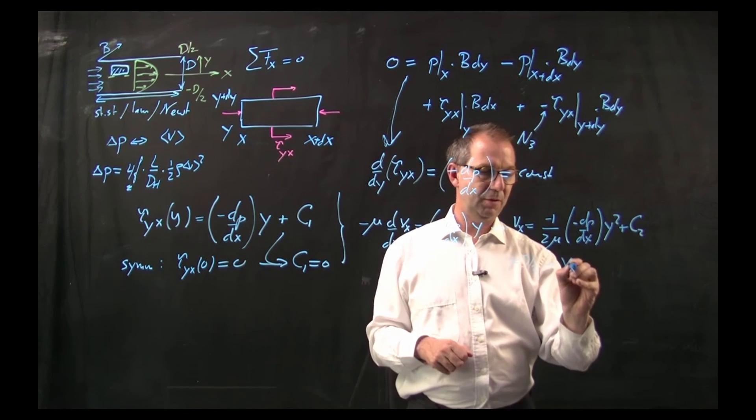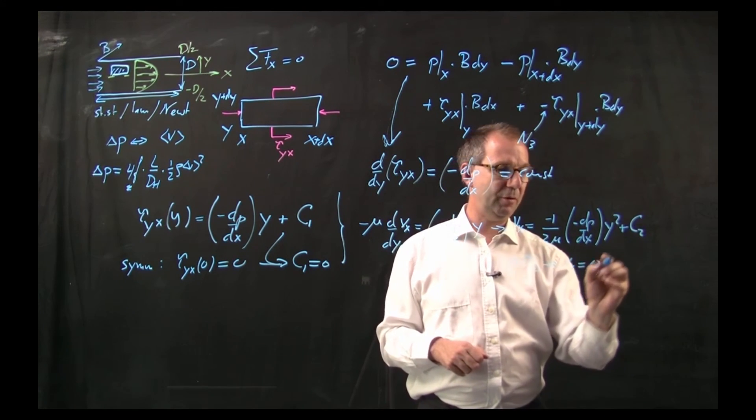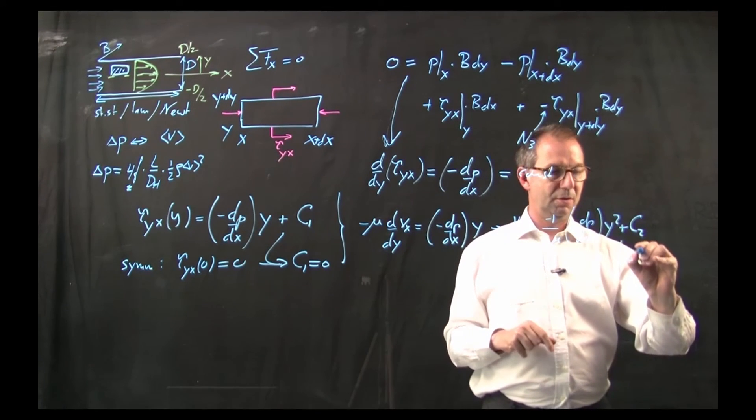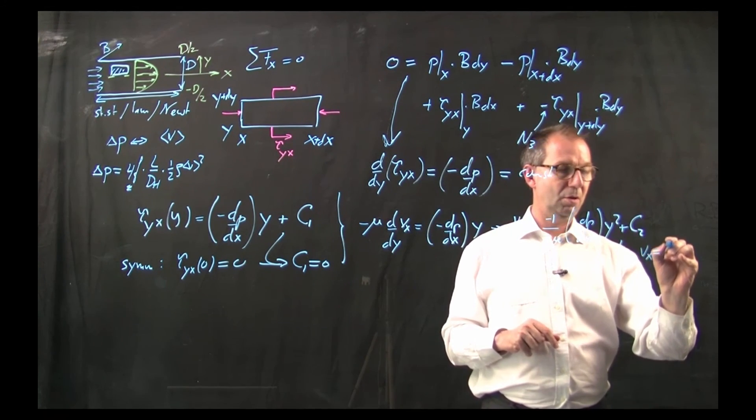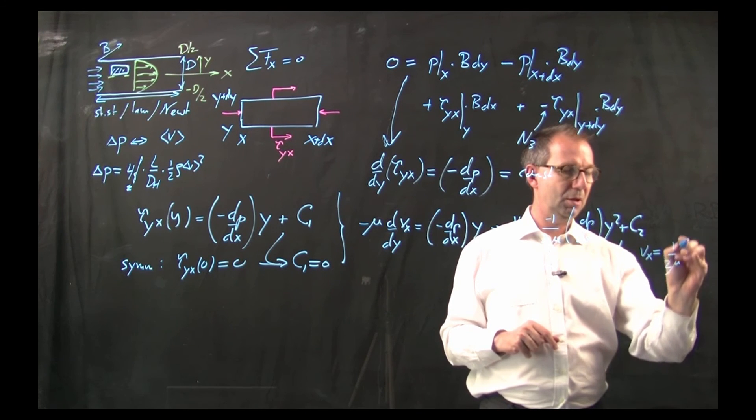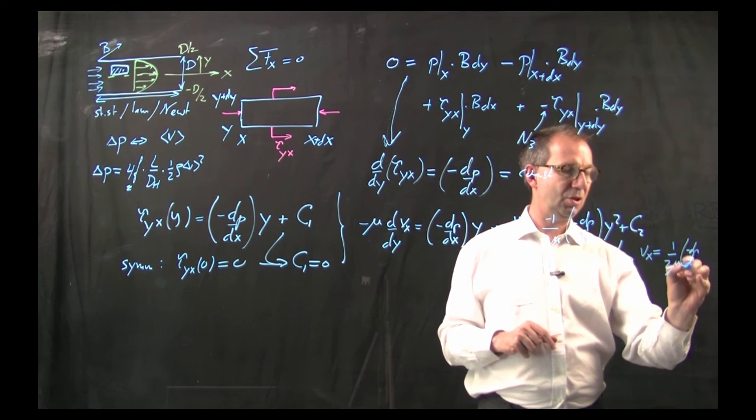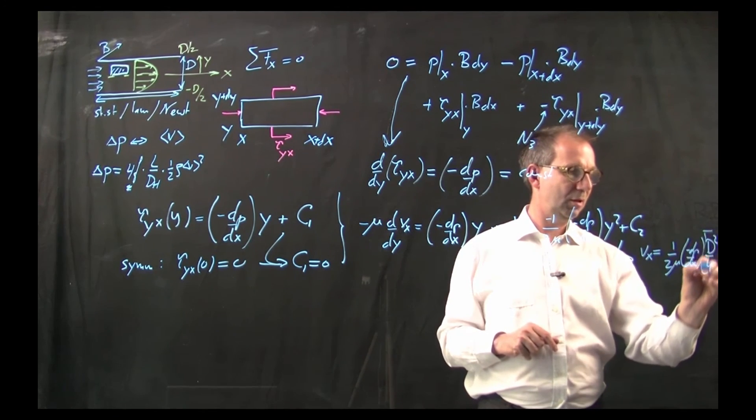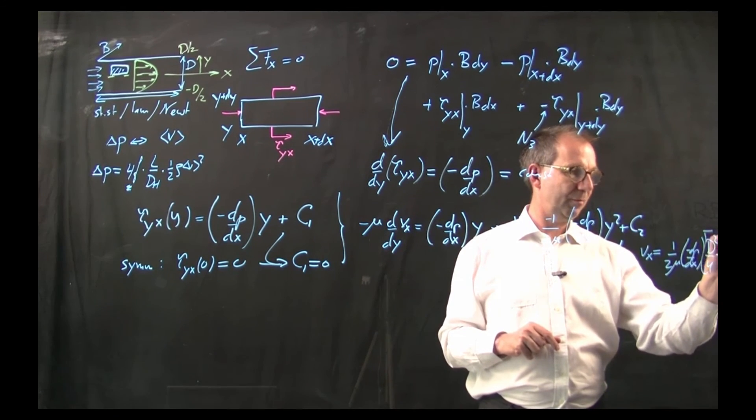The velocity V should be 0 and thus the total solution is Vx equals 1 over 2 mu minus dp/dx, d squared over 4 minus y squared.